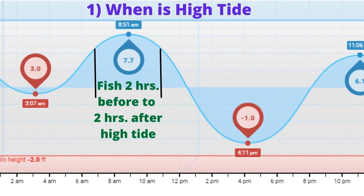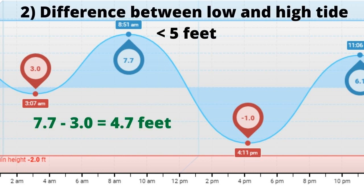I look at when high tide is, as I like to fish the first two hours before a high tide and two hours after a high tide. The second thing I look for is the difference between the low and high tide, and I want it to be less than five. The reason for this is that halibut like to feed in clean water. A difference of greater than five between low and high tide starts to muddy up the water. If you are not getting bites and are fishing in dirty water, find some clean water to fish in.